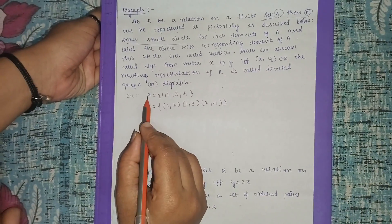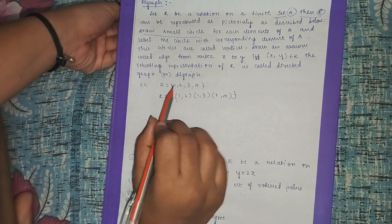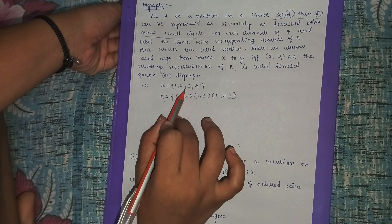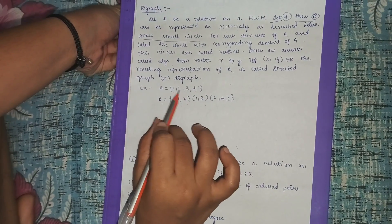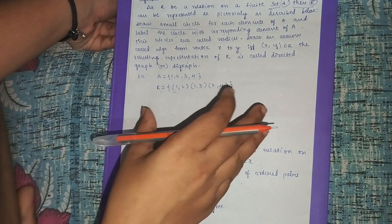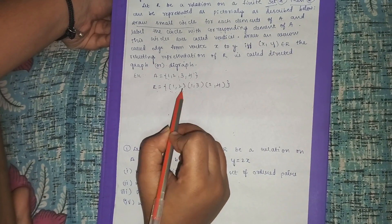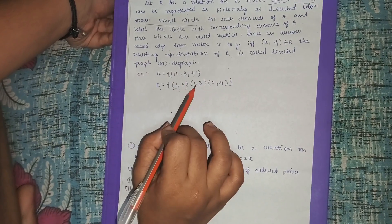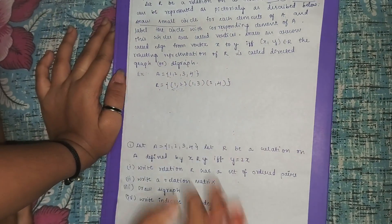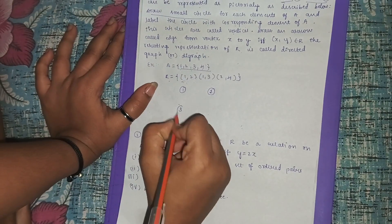For example, take set A = {1, 2, 3, 4}. We write the relation — the ordered pairs must contain elements from this set only. We can write (1,1) as well, but some questions give the relation and some won't. Here the relation given is: (1,2), (1,3), and (2,4). We verify each is in set A, then draw the diagram with four elements placed wherever convenient.